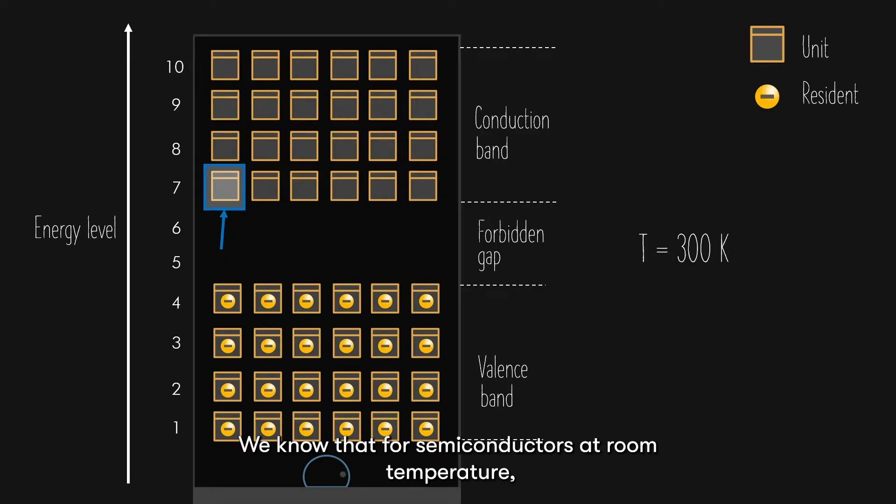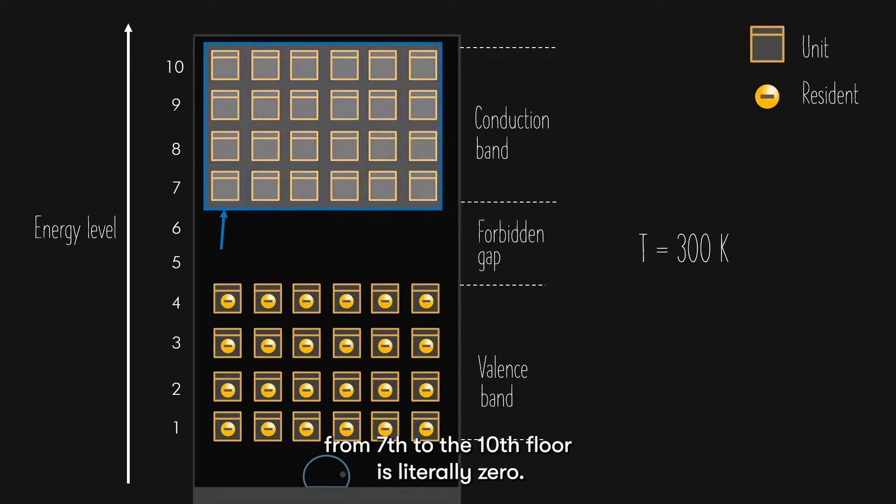We know that for semiconductors at room temperature, there are strictly no electrons in the conduction band. This means that the probability of an electron to occupy the units from the 7th to the 10th floor is literally zero.